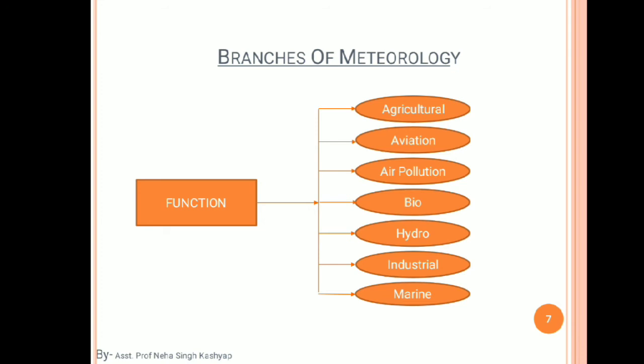The third functional branch is air pollution meteorology, where we study the atmosphere layer by layer — troposphere, ozone layer — and understand pollution in those layers. Bio-meteorology studies the types of biological factors that affect agriculture meteorology. Hydro-meteorology is a branch that deals with the hydrological cycle, water budget, and rainfall statistics.